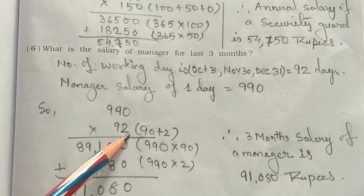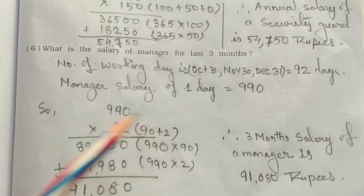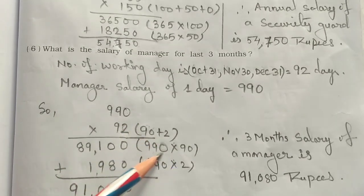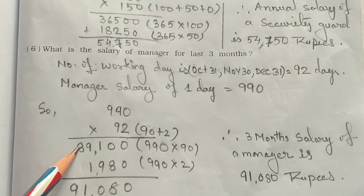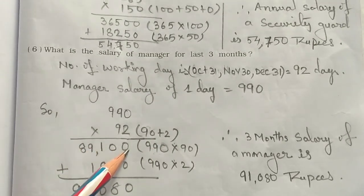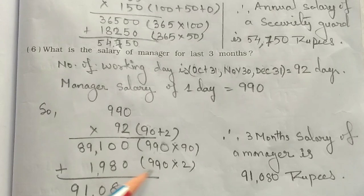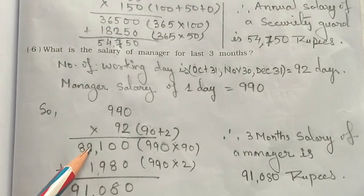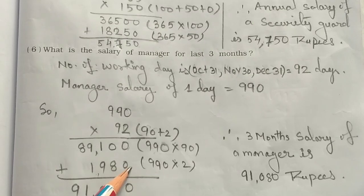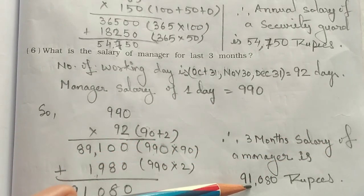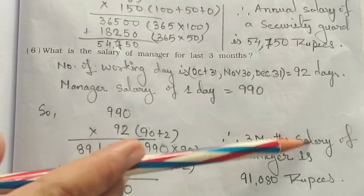Breaking it down: 92 = 90 + 2. So 990 × 90 = 89,100 on the first line, and 990 × 2 = 1,980 on the second line. Adding 89,100 and 1,980 gives 91,080.